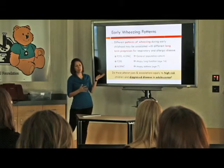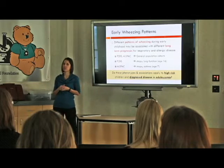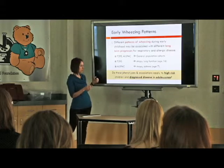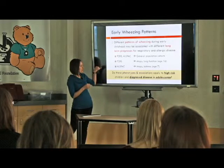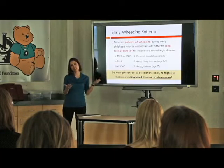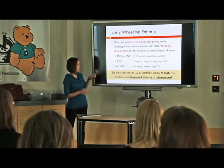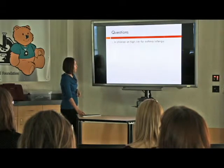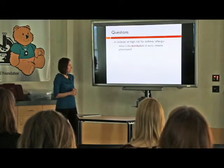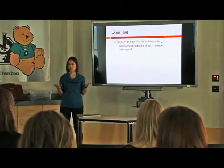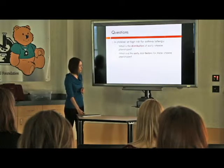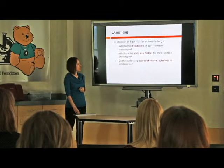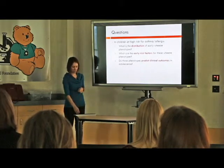Both of these are general population cohorts, and we wondered about high-risk children — children born into families with a genetic history of allergic disease. Diagnosed disease was also important: the Tucson study went to age 16 but looked at lung function and atopy rather than diagnosed disease, and ALSPAC looked at diagnosed asthma but only up to age 7. So our questions were: in high-risk children, what is the distribution of these phenotypes, what are the risk factors, and do the phenotypes predict clinical disease in adolescence?